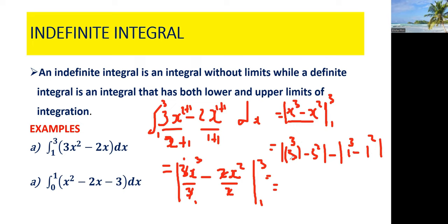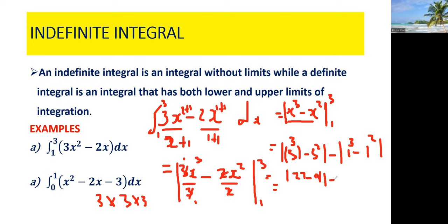3 cubed means 3 times 3 times 3, which gives 27. So we have 27 minus 3 squared, which is 3 times 3 = 9. Then minus: 1 cubed is still 1, minus 1 squared which is also 1, so that bracket gives 0. We're left with 27 minus 9, which gives us 18. That's the final answer.